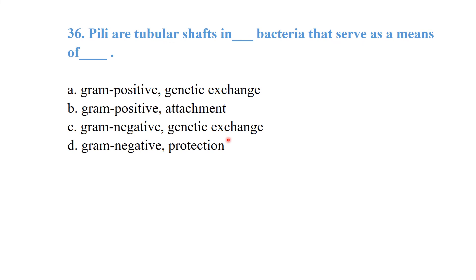Pili are tubular shaft structures mainly found in gram-negative bacteria. They serve as a means of exchange of genetic material. Option C is the best answer.